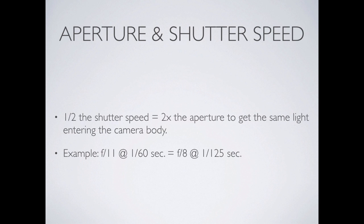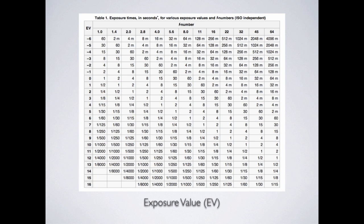Aperture and shutter speed have an inverse relationship. If you change the shutter speed by half, you have to double the aperture for the same exposure level. If you made the shutter speed less, you'd have to increase the aperture. What I recommend: find the shutter speed priority mode on your camera, adjust the shutter speed, and let your camera determine the rest of the settings for the proper exposure.